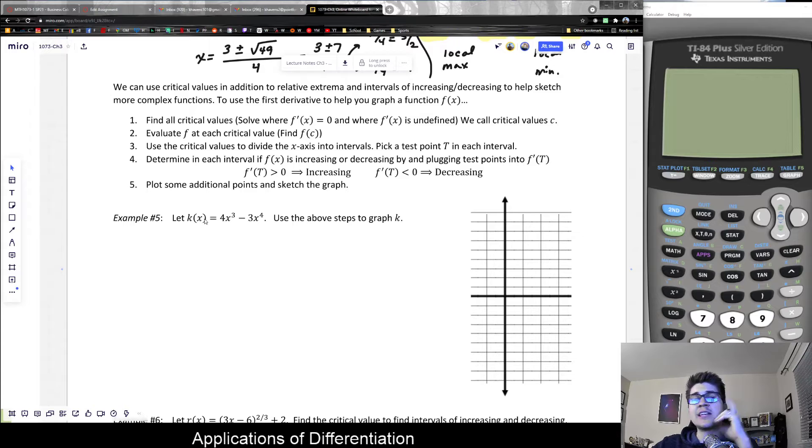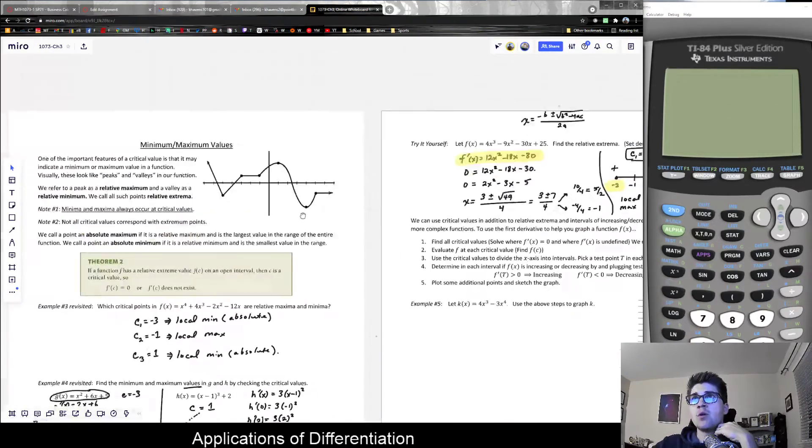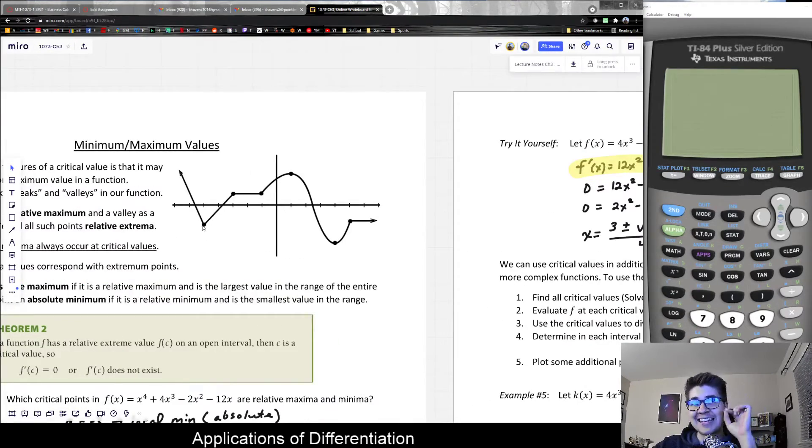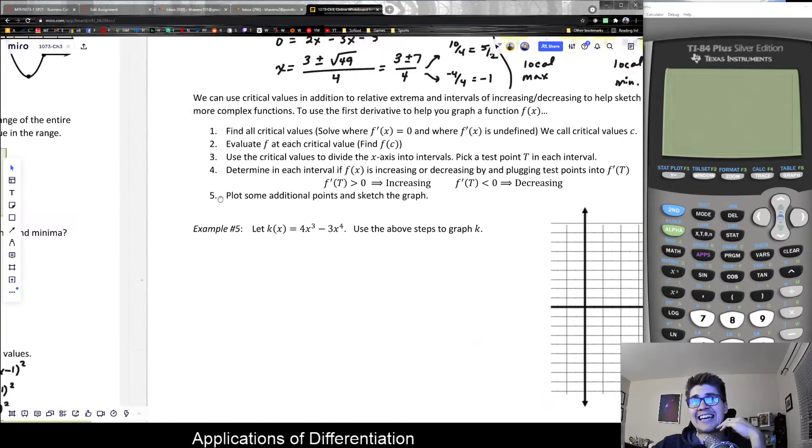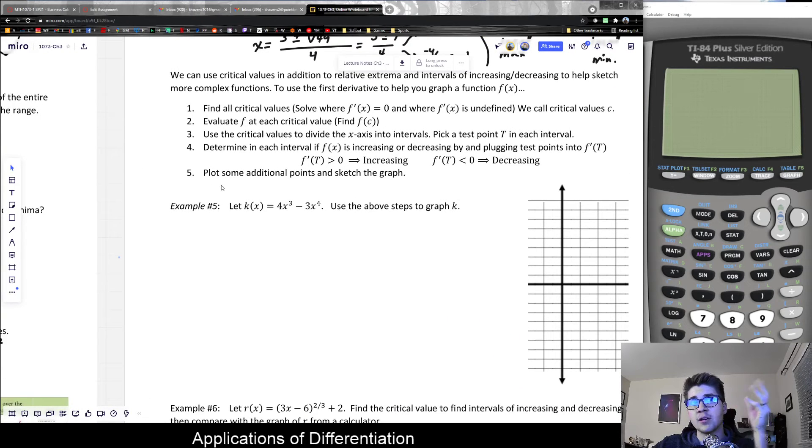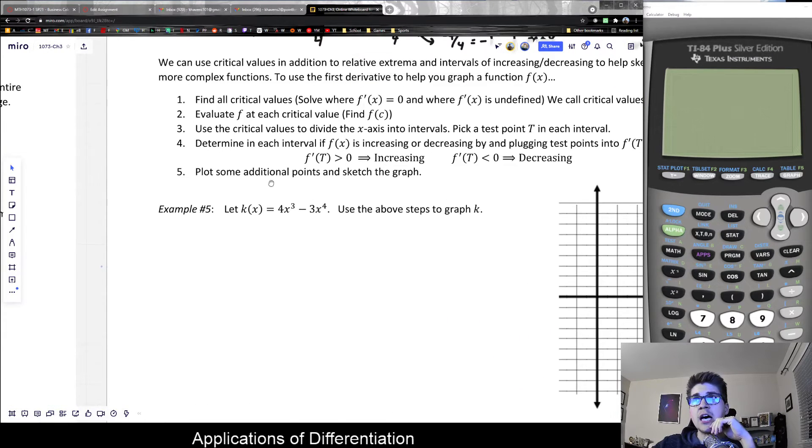Let's look at example number five. It says let k(x) be this function 4x³ - 3x⁴, use the steps to graph k. The critical values will correspond to interesting points on the curve, like key points, which are important to know. Usually, especially at the calculus level, we label all the critical points on our curves.